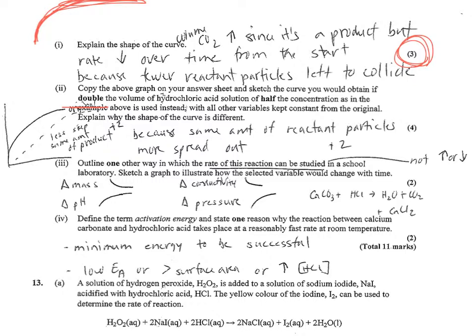The most common mistake on this was it didn't ask how to increase or decrease the rate. Some of you said change the concentration, change the temperature. It's asking how the rate can be studied or measured, and that's different.